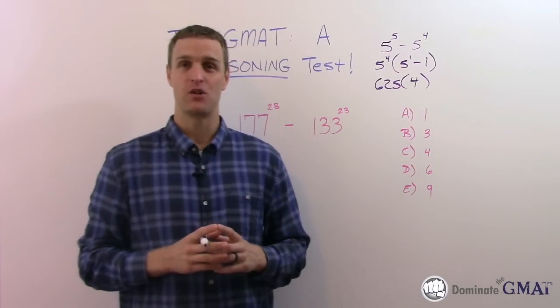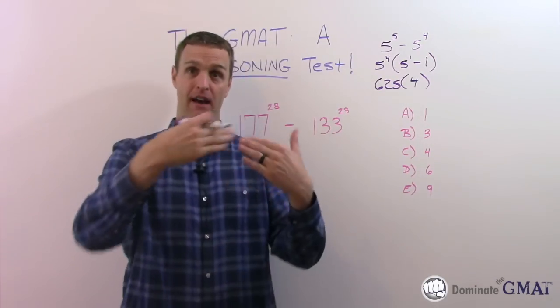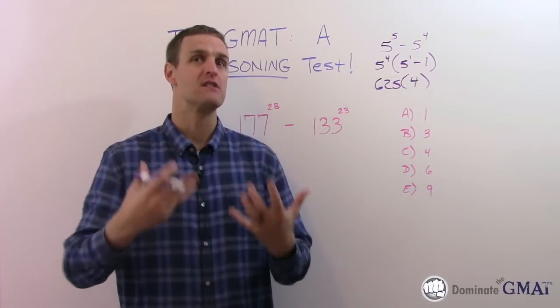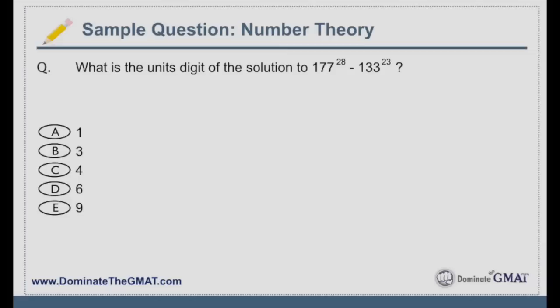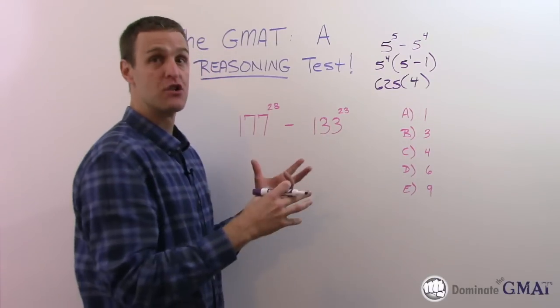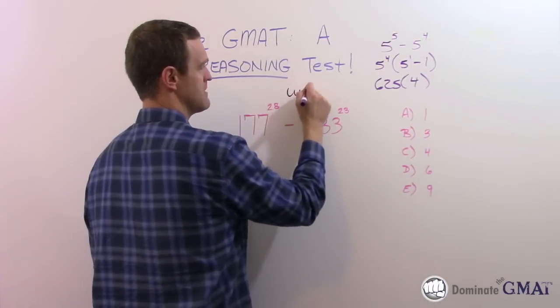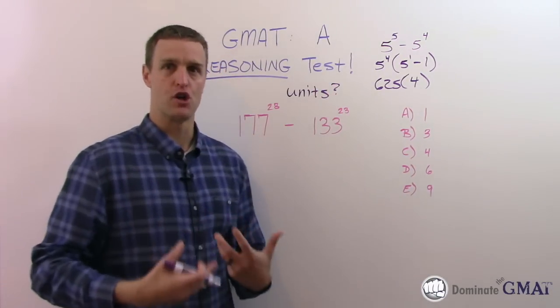But we don't have something like that for this question. So what do we do? One thing I'm always telling my students is if you feel stuck and don't know what to do, can't see the whole picture, do something. Maybe the reasoning will come along with it. All we care about is the unit's digit. Think back to the question itself - what is the unit's digit of the solution? I don't care what the whole answer is, I just care about the unit's digit.